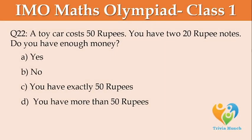A toy car costs 50 rupees. You have two 20 rupees notes. Do you have enough money? Option A: Yes, Option B: No, Option C: You have exactly 50 rupees, Option D: You have more than 50 rupees.